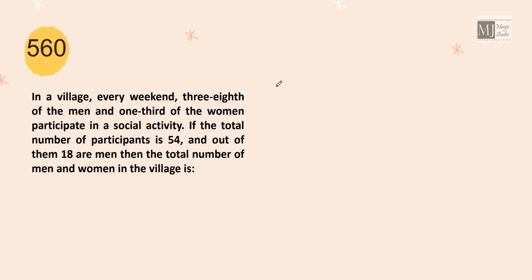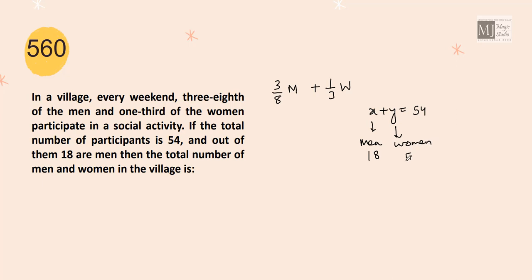In a village, every weekend, three-eighths of the men and one-third of women participate in a social activity. If the total number of participants is 54, that means x plus y is 54. And out of them, 18 are men. That means number of men participating are 18. Then number of women participating are 54 minus 18, that is 36. Then find the total number of men and women in the village.